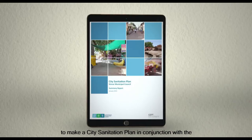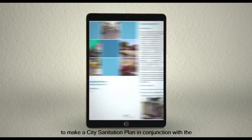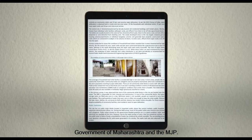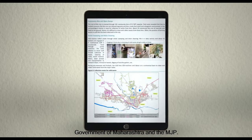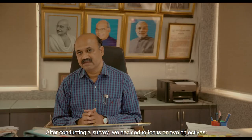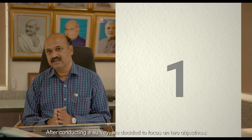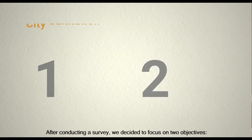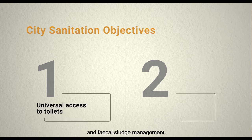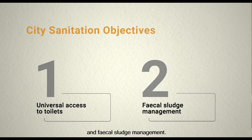In 2012, the Sinar Municipal Council made a decision — the government of Maharashtra and NJB had made a city sanitation plan. After reviewing all ideas, they settled on two objectives: one is universal access to toilets, and the other is fecal sludge-free management.